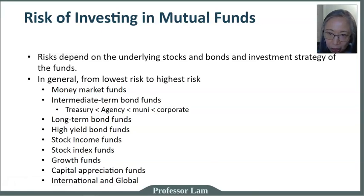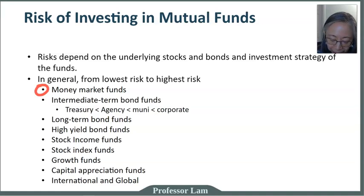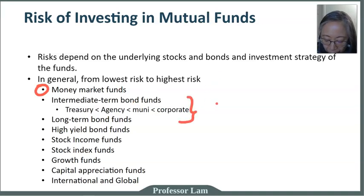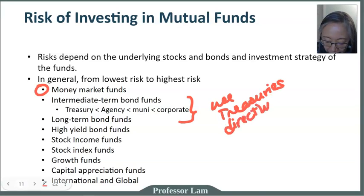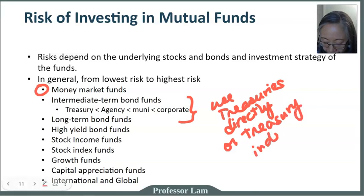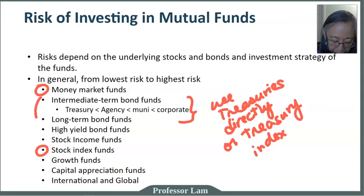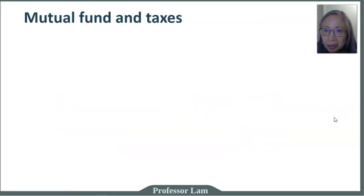As an investor, what would your best risk allocation strategy be? At a minimum, you should have a money market fund because that will help you invest your short-term funds — your emergency fund or savings for short-term goals. You can have either a long-term or intermediate-term bond fund, using Treasuries directly if you have sufficient capital, or a Treasury index fund. Then you can use a stock index fund. Between those three, you would have sufficient tools to create a well-diversified and balanced portfolio.